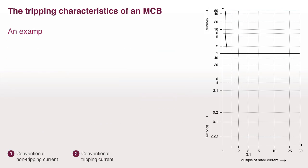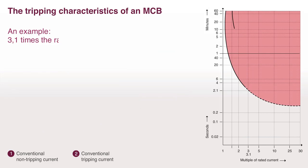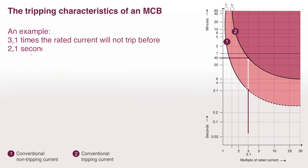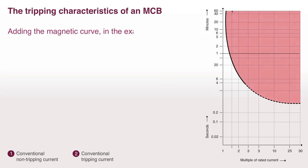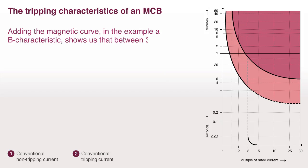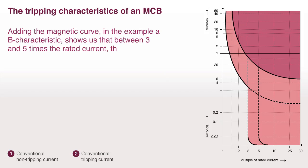An example: 3.1 times the rated current will not trip before 2.1 seconds, and the latest trip will occur after 40 seconds. Adding the magnetic curve, in the example of B characteristic, shows us that between 3 and 5 times the rated current, the magnetic coil will trip the MCB.